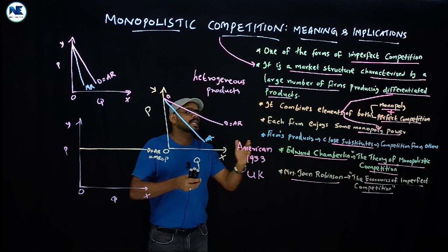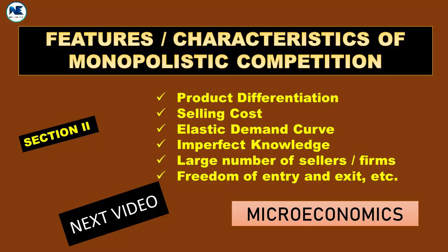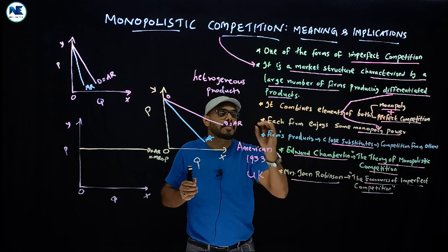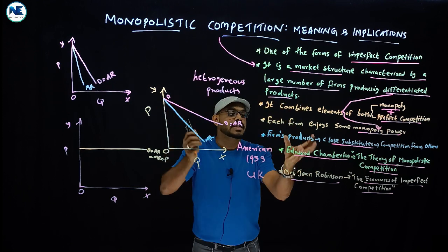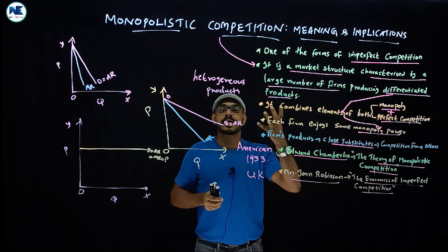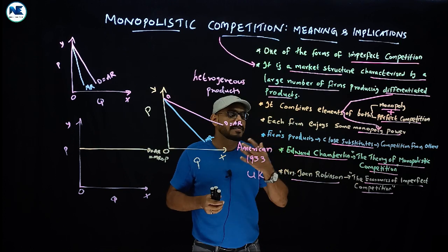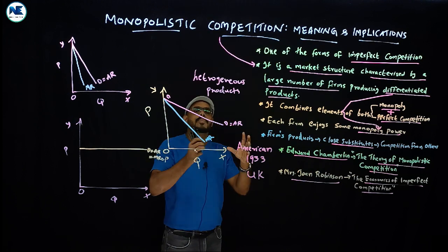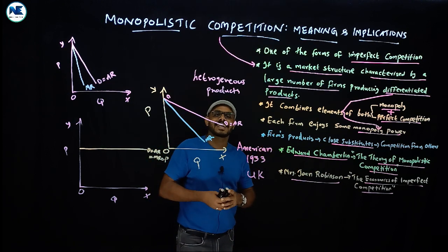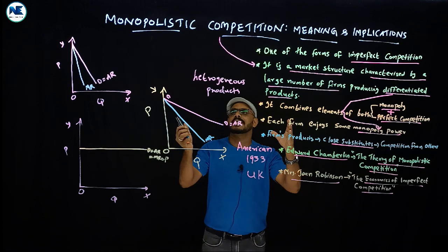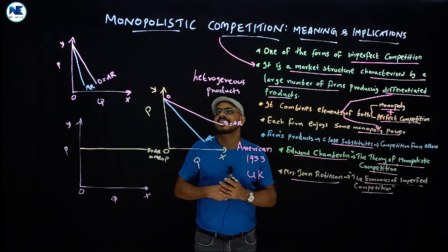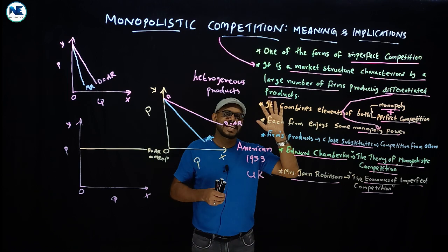I would like to wind up the topic here. In the coming video we will discuss important features or characteristics of monopolistic competition. Please note all these points — they are very important. Remember the names of two great economists: Edward Chamberlin and his 'Theory of Monopolistic Competition,' and Mrs. Joan Robinson and 'The Economics of Imperfect Competition.' Have a nice day, thank you.